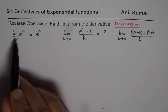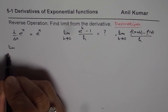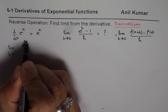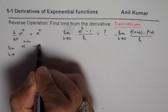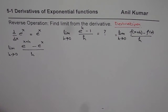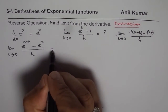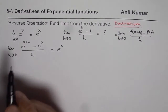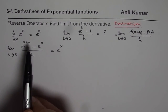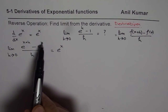This derivative can be written in definition form as the limit as h approaches 0. Since the function is e to the power of x, we write it as e to the power of x plus h minus e to the power of x, all over h. And we know this derivative equals e to the power of x.